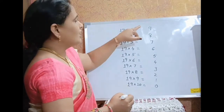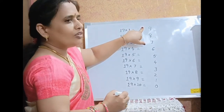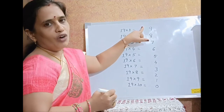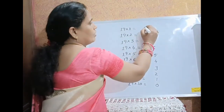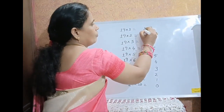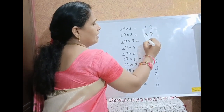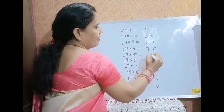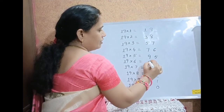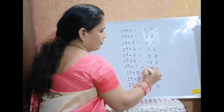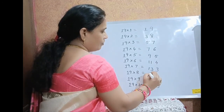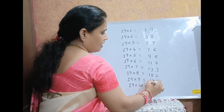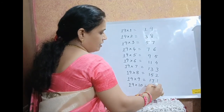For the tens digit, you have to write the odd numbers from 1 to 19: 1, 3, 5, 7, 9, 11, 13, 15, 17, 19.